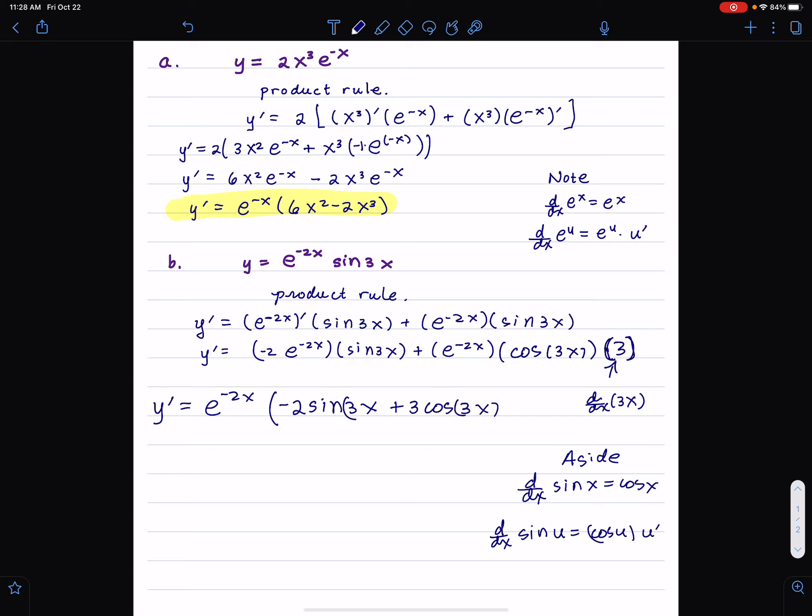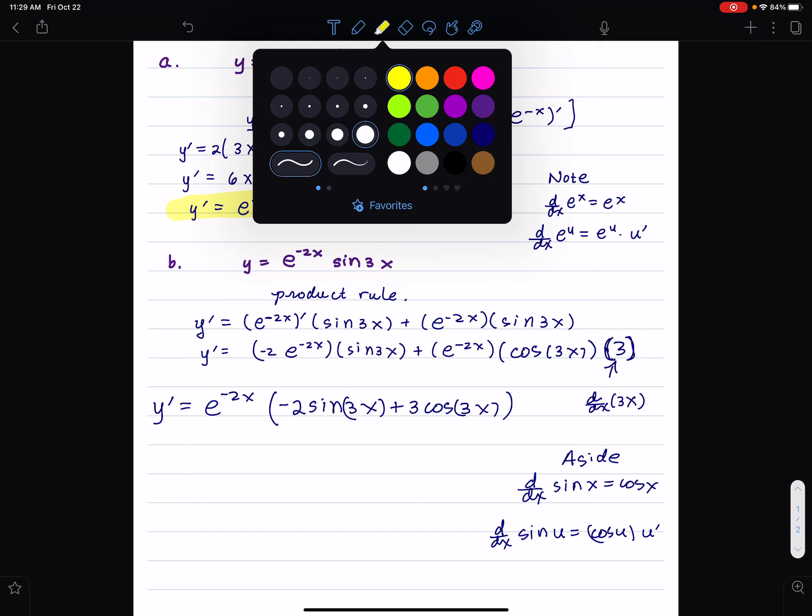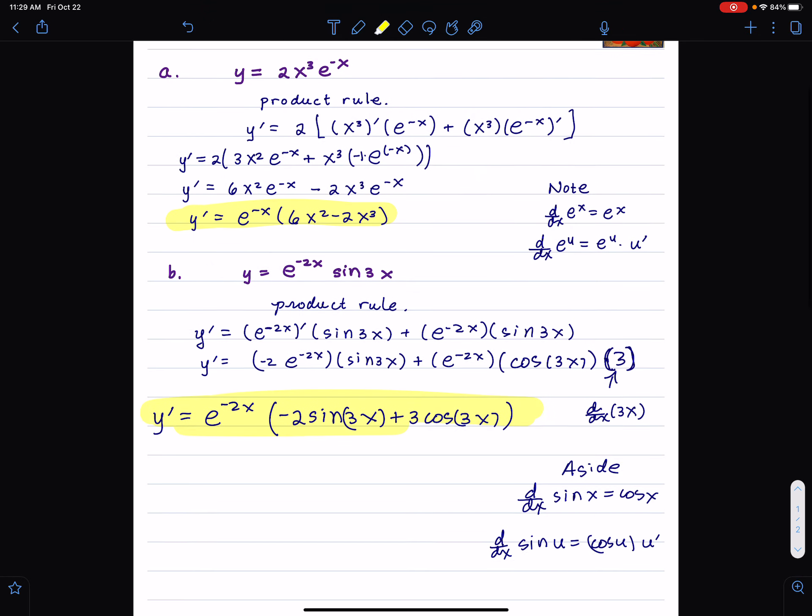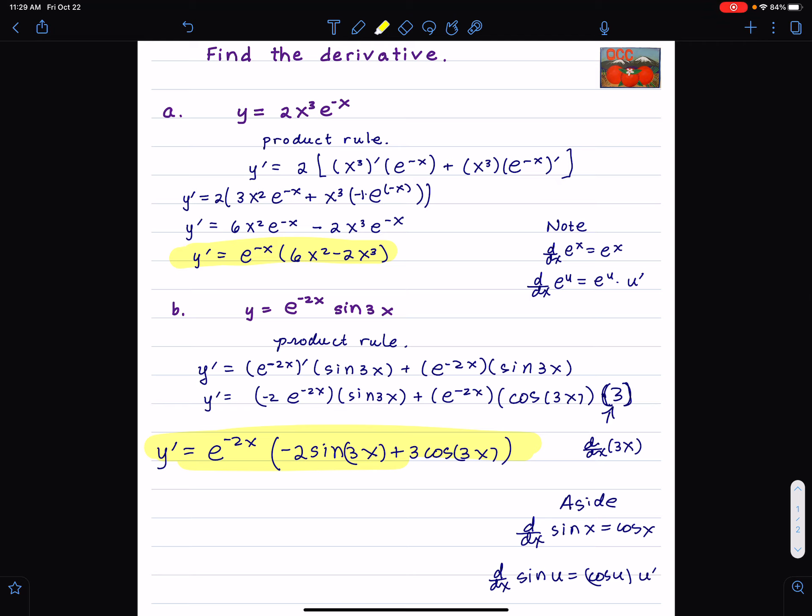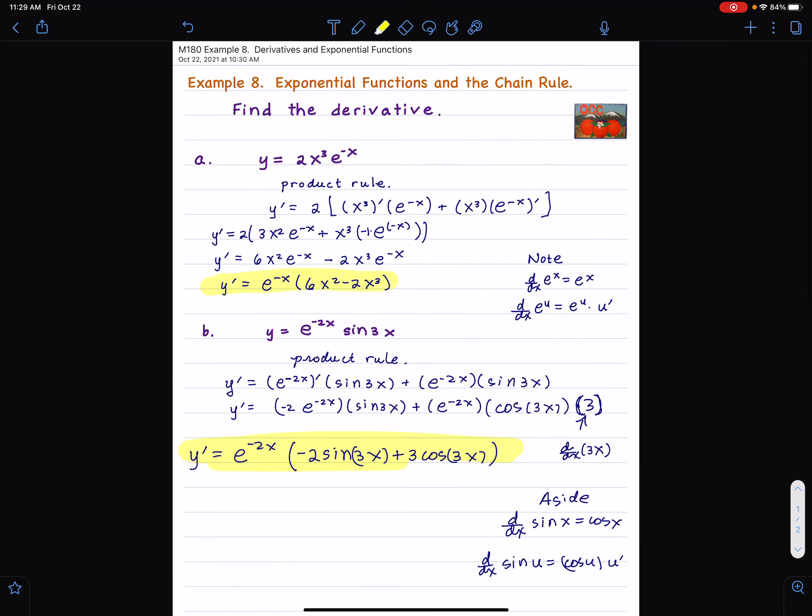There's actually a way that you can combine this into one shifted sine function times a constant. Like, a constant times sine 3x minus a number. But anyway, let's leave it like this. So those are just two problems where we did a bit of chain rule and exponentials, polynomials and derivative sine. Let's end up. Thank you so much, and take care.